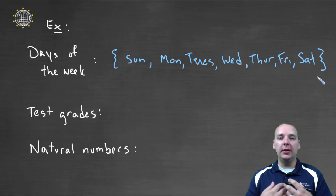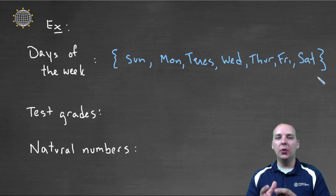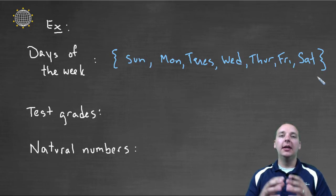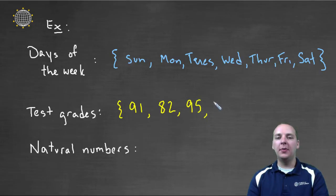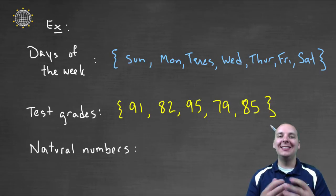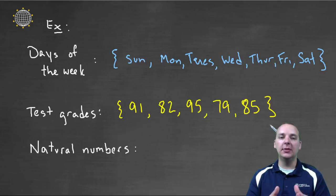Now most of the sets we'll be dealing with in our algebra class won't have days of the week or other types of objects in it. They'll have numerical values in our set. So you can write a set very easily with let's say test grades. So we would have a curly brace and then we would put some test grades for the semester. Maybe we got a 91 on a test, maybe we got an 82, maybe a 95, maybe a 79, and maybe an 85 or something like that. So here would be a set of five test grades. And again, notice we simply separate them using a comma.